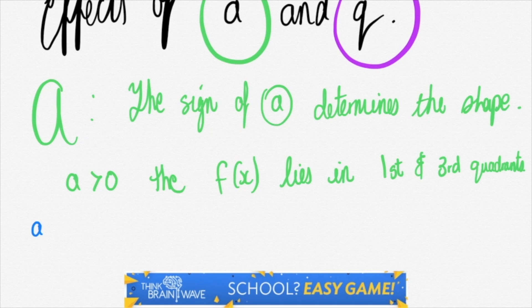Now the first quadrant is the top right-hand quadrant, then the second would be top left, third bottom left, fourth bottom right.